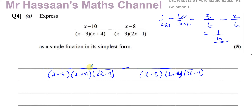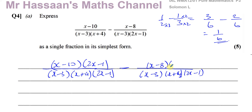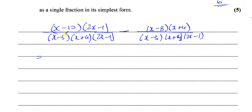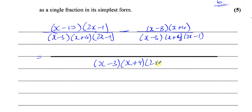Now I've made them the same denominator. What's different between the original first fraction and the new denominator? I've multiplied by 2x minus 1, so I must multiply the numerator also by 2x minus 1. Similarly, I've multiplied the second by x plus 4, so I must multiply that numerator by x plus 4: x minus 1 times x plus 4. Now I can expand the numerator under one common denominator.